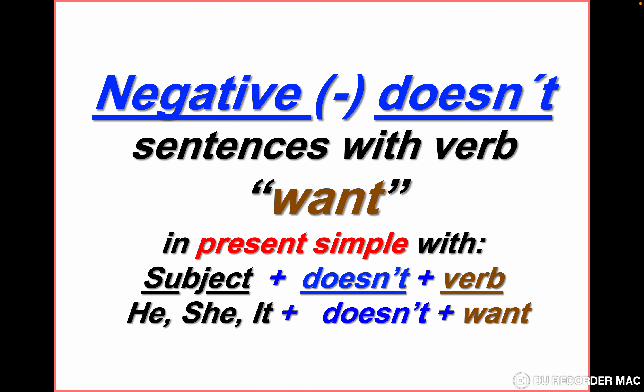Let's go to the negative form. The rule is: subject plus 'doesn't' plus verb. He doesn't want, she doesn't want, it doesn't want. Note that 'want' with 'doesn't' does not take 's', even if it is with he, she, or it. With 'doesn't', the verb is in the infinitive — it doesn't take 's'.